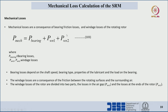Mechanical losses equal bearing losses plus windage losses. The bearing loss depends on shaft speed, bearing type, properties of the lubricants, and load on the bearing. Windage losses arise from friction between the rotating surface and surrounding air, and are divided into two types: loss with respect to the air gap region, and loss with respect to the end region of the rotor.